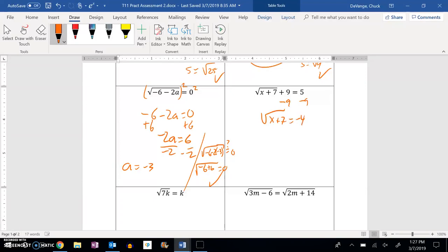So you might right away notice, square root is not going to spit out a negative. So right away you could say no solution. If you didn't see it, if you kept going from here, you square both sides. And you get x plus 7 is positive 16.